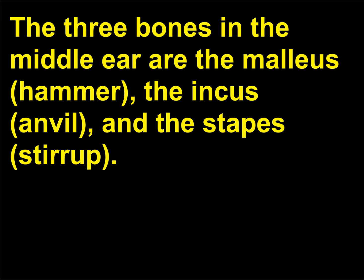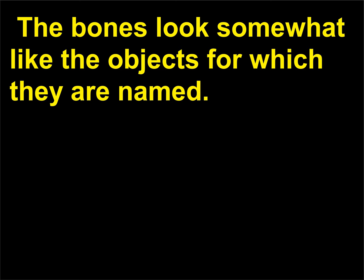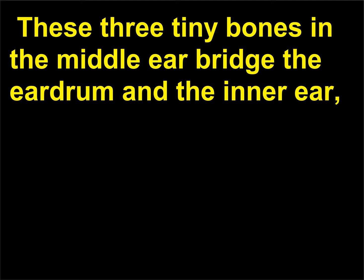The three bones in the middle ear are the malleus (hammer), the incus (anvil), and the stapes (stirrup). The bones look somewhat like the objects for which they are named. These three tiny bones in the middle ear bridge the eardrum and the inner ear, transmitting sound vibrations.